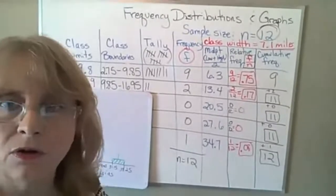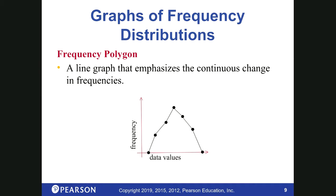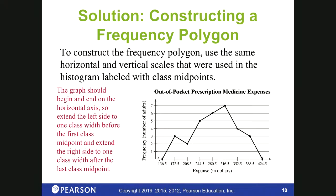The next kind of graph is called a frequency polygon. I'm going to go through the remaining graphs fairly quickly because I want to save about five minutes to talk about the learning catalytics quiz that will come up in your homework. A frequency polygon is a line graph — the other one was a bar graph — and it emphasizes continuous change in frequencies. It always starts on the x-axis and ends on the horizontal axis.